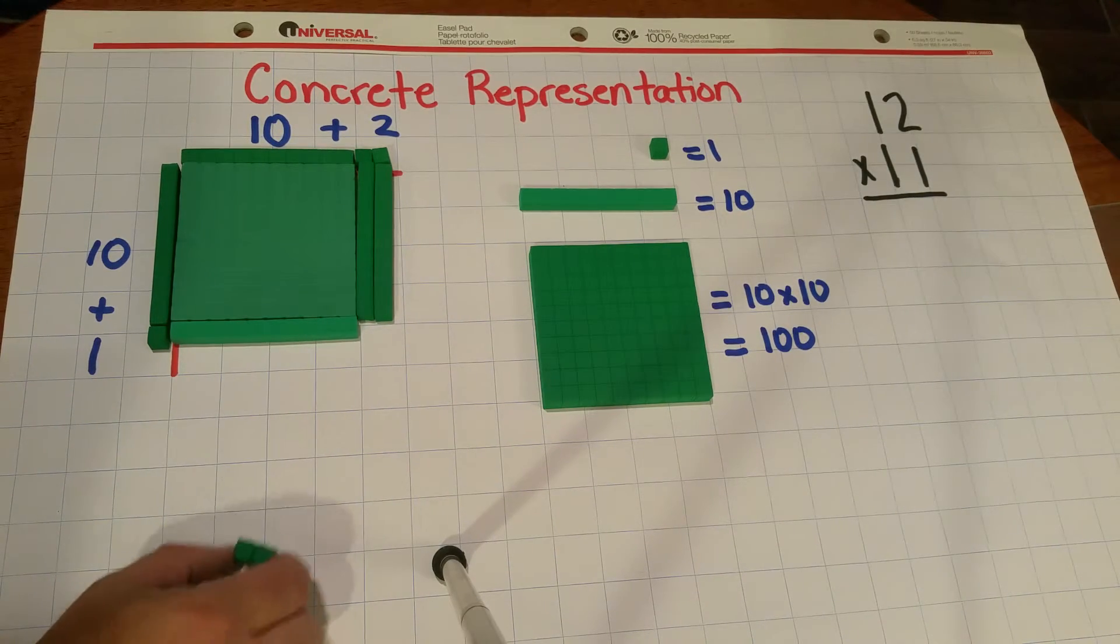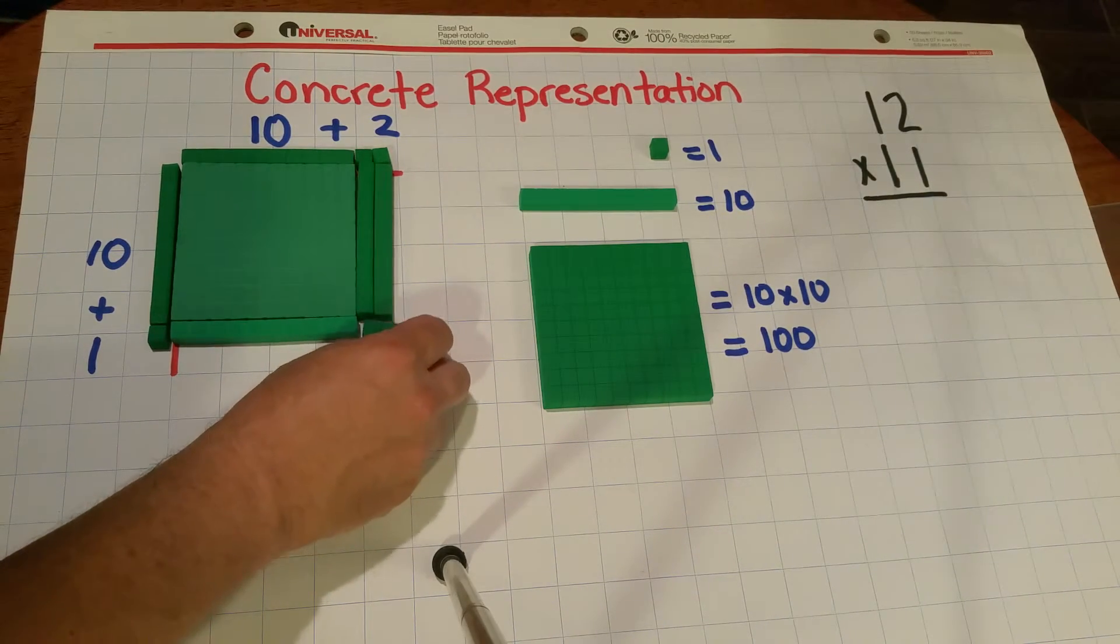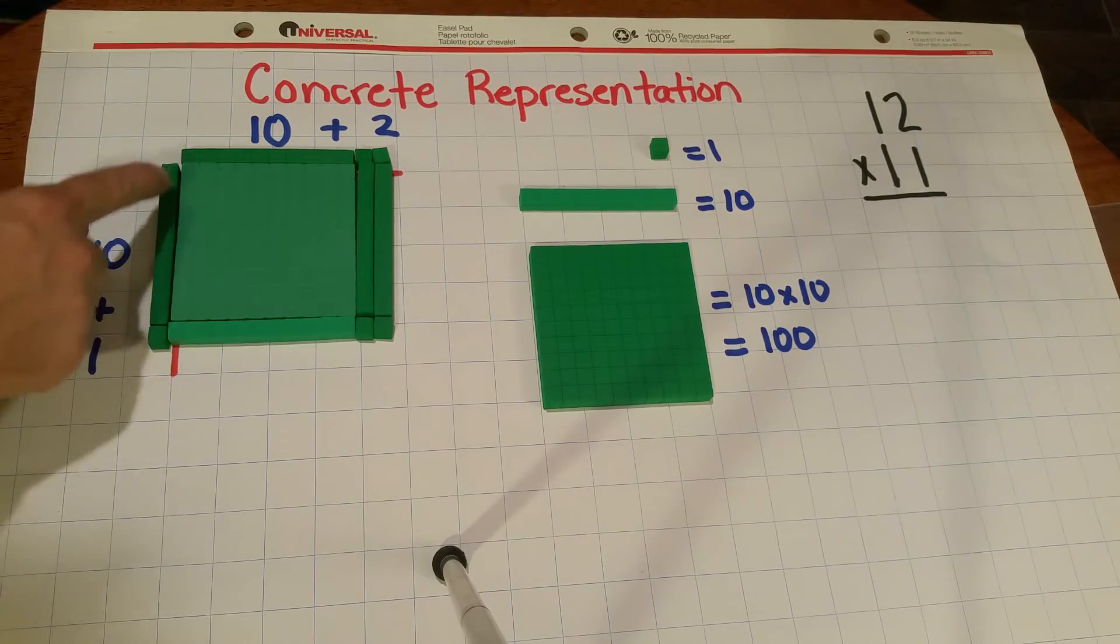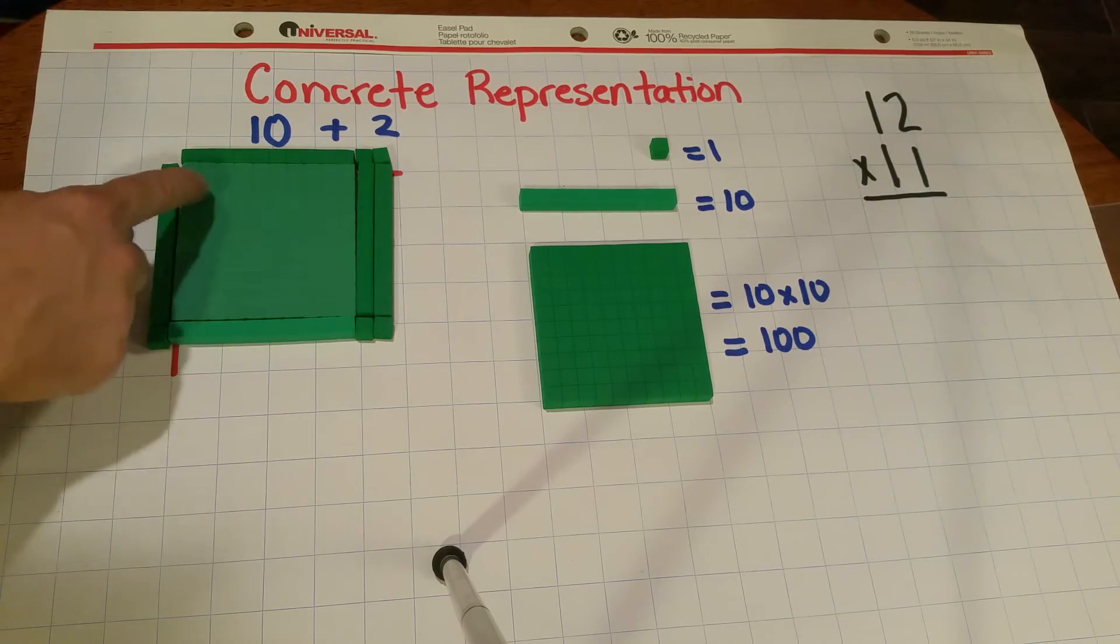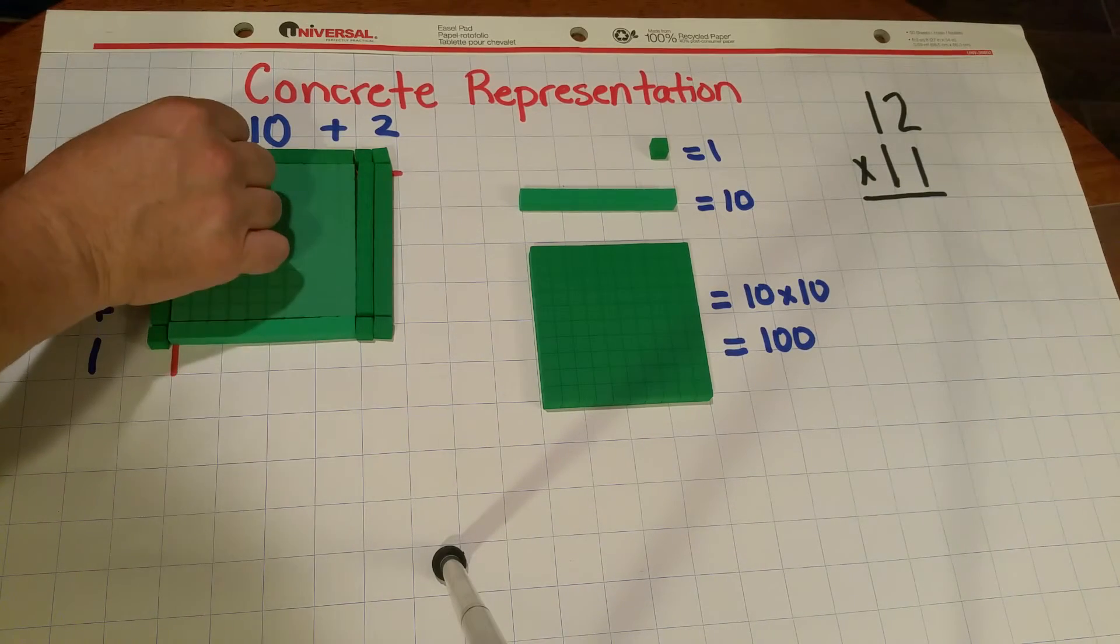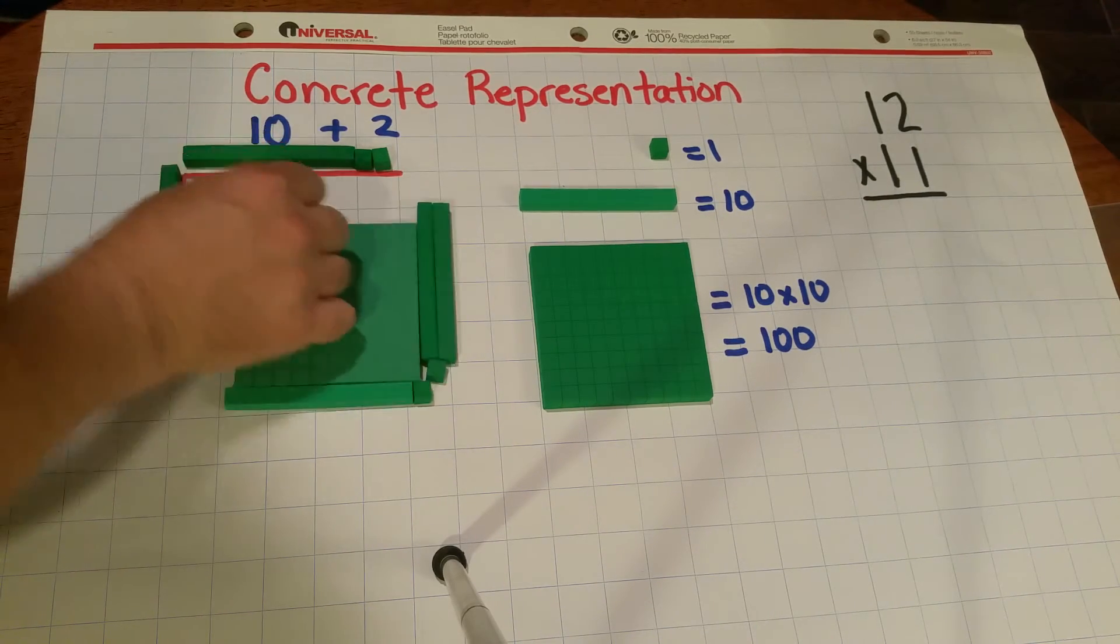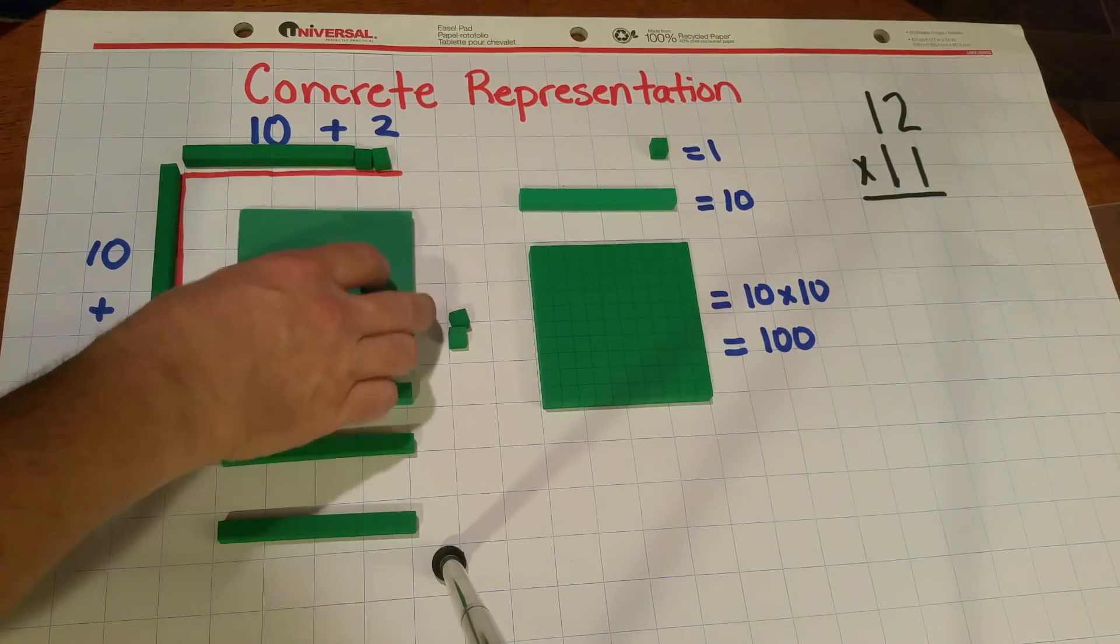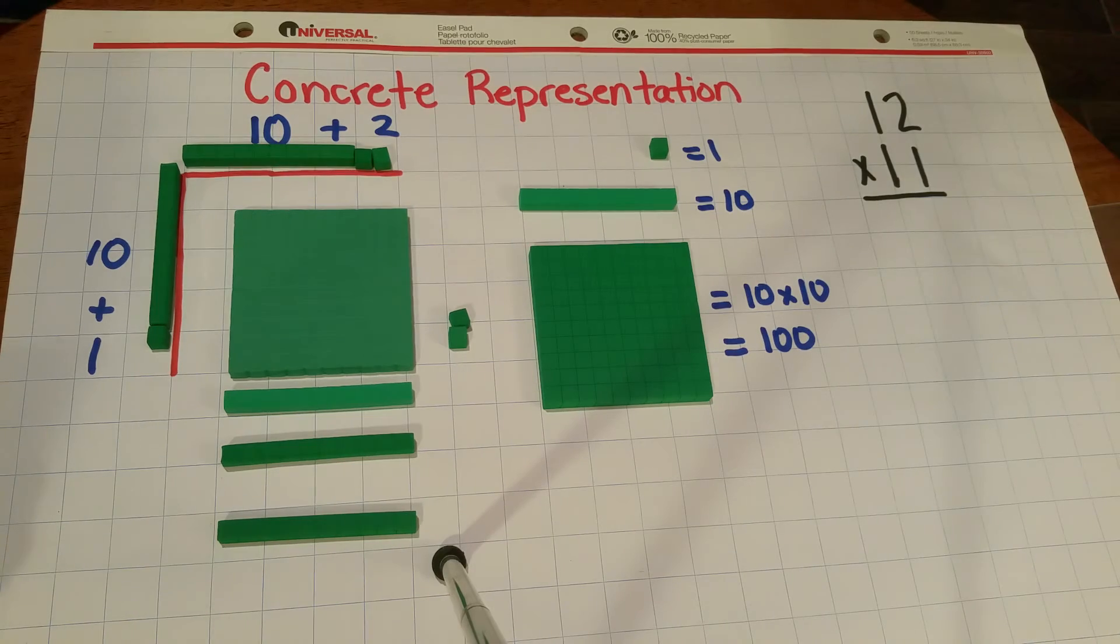So I have to complete it with two units. And now what I want to emphasize is I have an 11 row by 12 column array right here, and that array, as you can easily see, has a value of 132, and that's how I'd like students to be able to build 11 by 12.